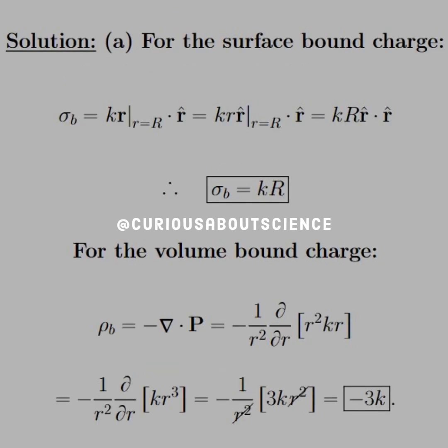So the solution for part A is pretty simple, but we have to take care of some annoying math stuff. For the surface bound charge, we know that we have the vector r, but it's a dot product with r hat. How do we get r hat from r? Well, that's just the magnitude of the vector times the direction. So vector r goes to magnitude r times r hat.